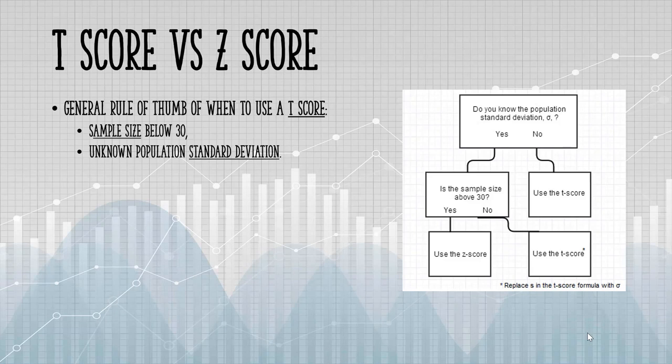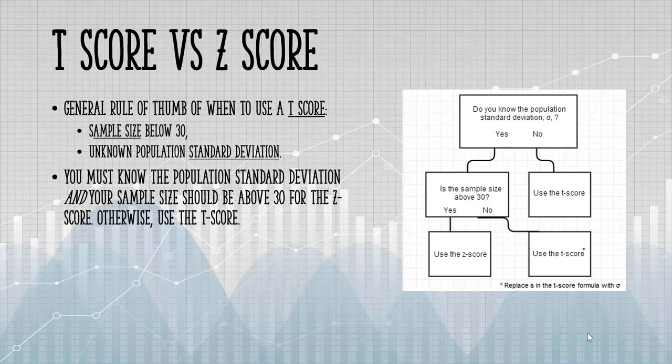In order to be able to use a Z-score, you must know the standard deviation of the population and your sample size should be above 30. If you can't meet both of those requirements, use the T-score. This diagram to the right is a flowchart that will walk you through the steps. If you do not know the population standard deviation, that's sigma, the flowchart sends you straight away to use the T-score.